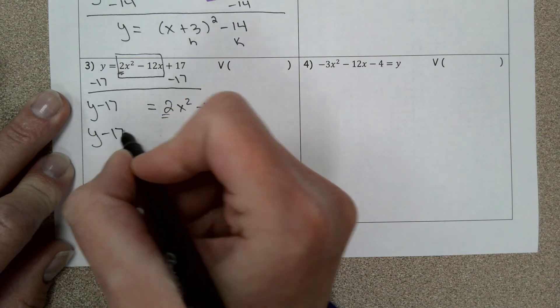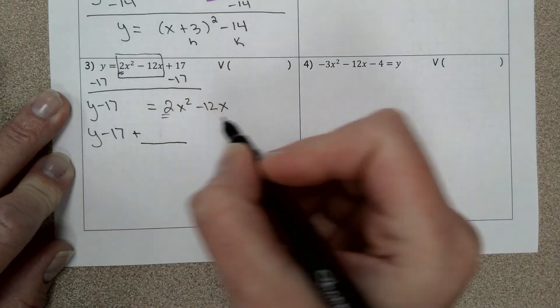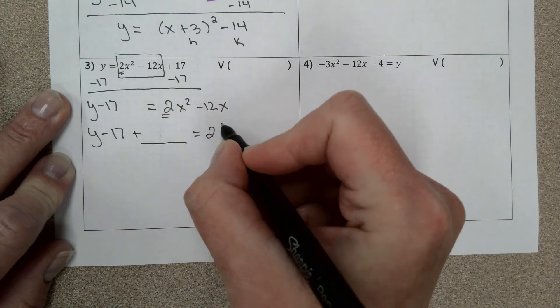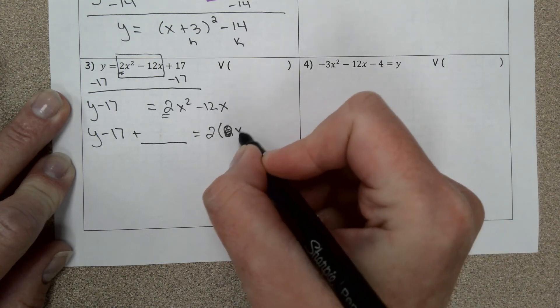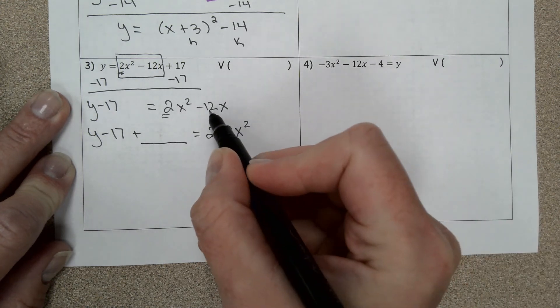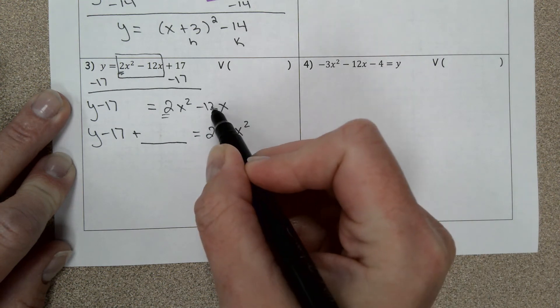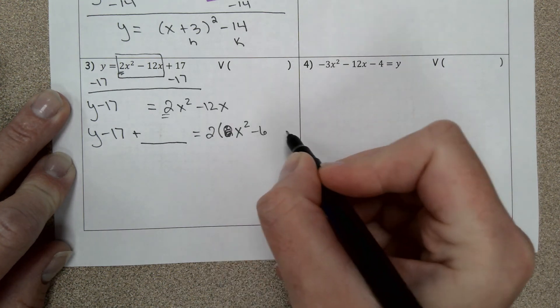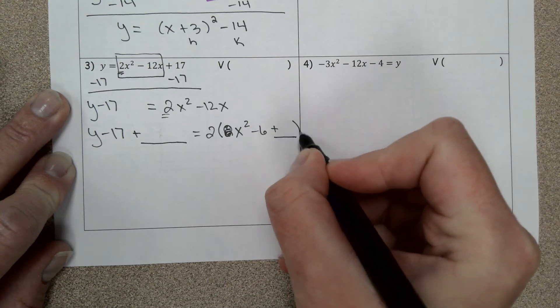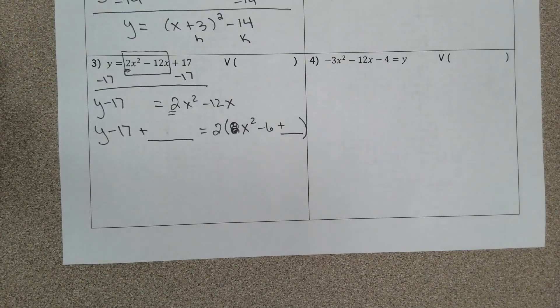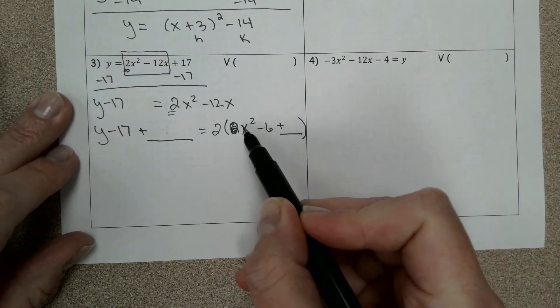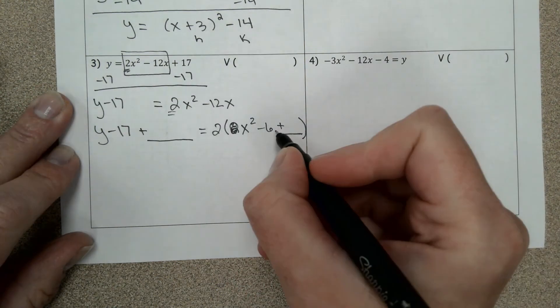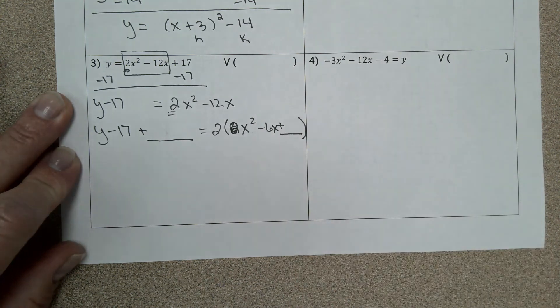This is your leading coefficient, it's the coefficient of your biggest exponent. Y minus 17, give me a plus blank. I'm going to factor out a 2. And so when you factor out you divide it, so that negative 12 divided by 2 is negative 6.